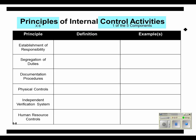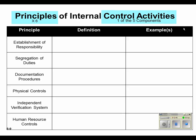Let's start with the first principle — let's define it and list some examples. Beginning with the first one: the establishment of responsibility. What is it? Basically, it assigns responsibility to specific employees and limits access to authorized personnel.